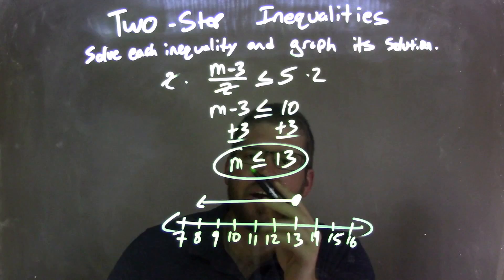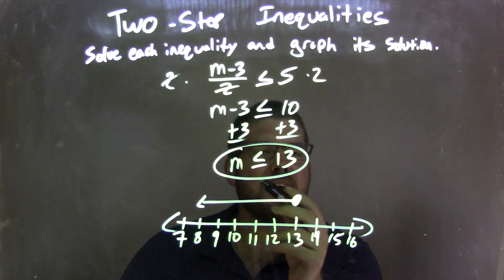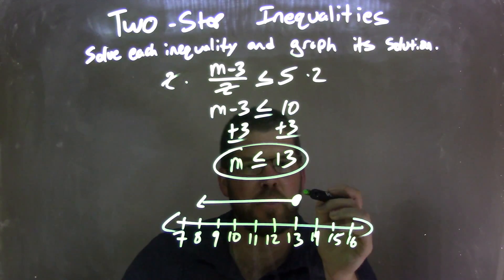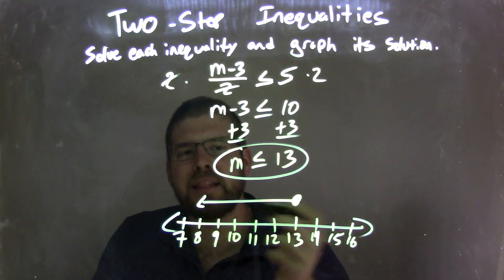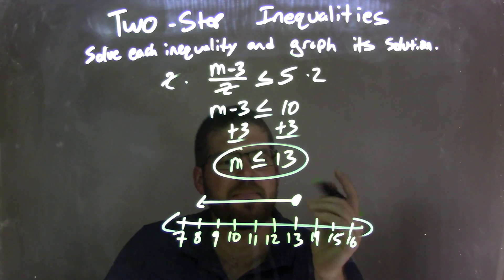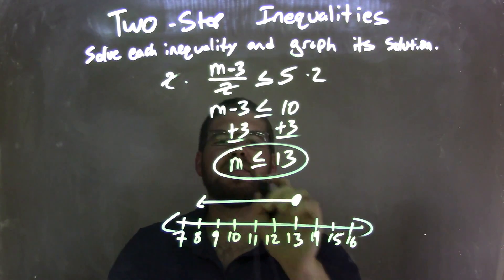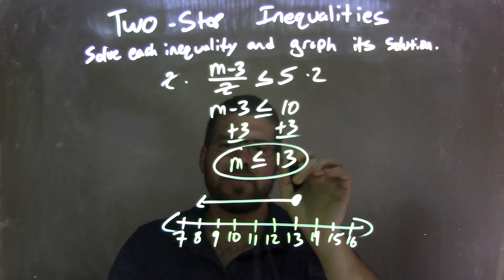That's my final answer right there. M is less than or equal to 13. It's isolated. M is written first. So I have to graph it. I have a closed circle here at 13 because m can equal 13, and my arrow went to the left because m is also less than 13. So I have a graph here that matches my final answer, which is m is less than or equal to positive 13.